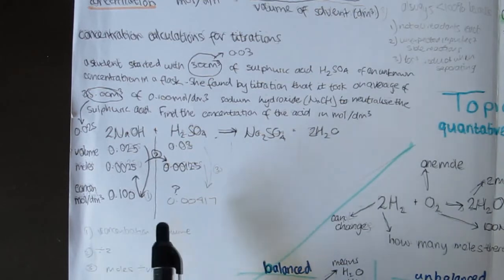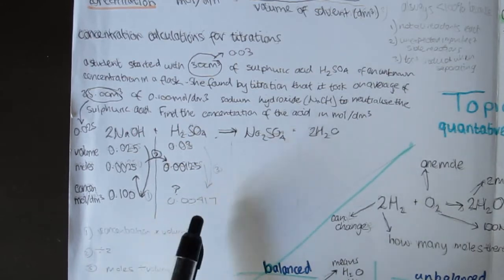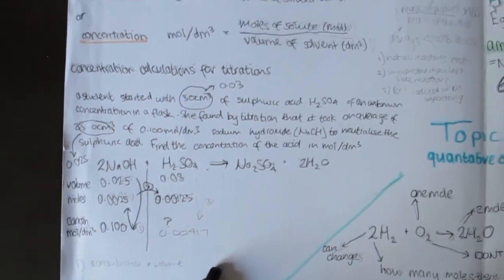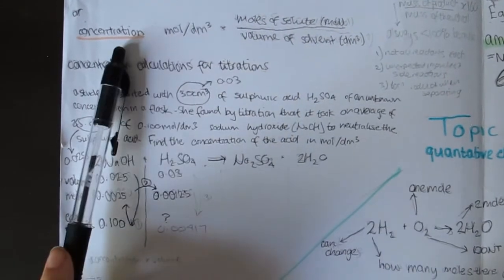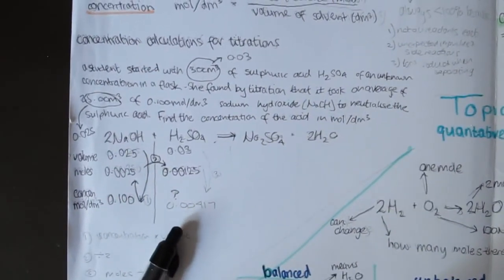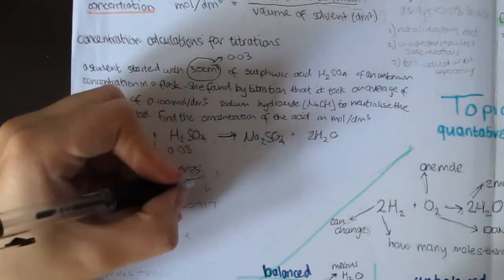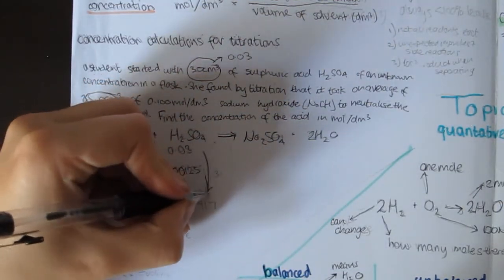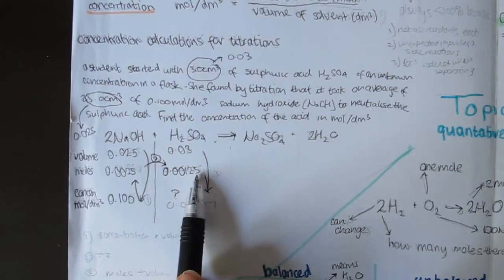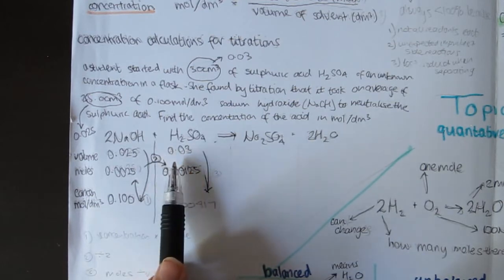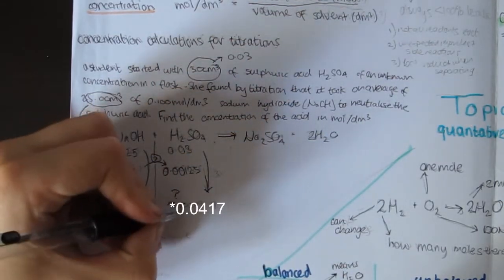So 0.0025 divided by two is 0.00125. Now, step three. We have all of the pieces of the puzzle that we need to find the concentration. So now we can go back to our equation up here. So moles divided by volume is the concentration. So therefore down here, the moles divided by the volume is also the concentration. So we're doing 0.00125 moles divided by 0.03, which gives you 0.00417.